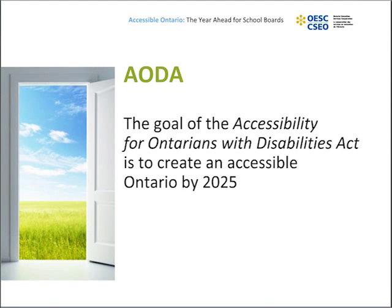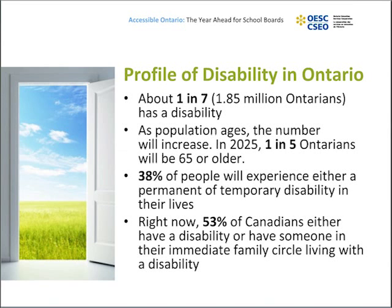Specific resources on the Teachable website, as well as other resources available to support boards as they implement this training, will be discussed in detail in later slides. The Accessibility for Ontarians with Disabilities Act was introduced in 2005 with the goal of making Ontario an accessible society for people with disabilities within a span of 20 years. Unlike a lot of other legislation, it is not complaints-driven and is structured to promote progressive and proactive efforts towards full accessibility on the part of all organizations in the province.